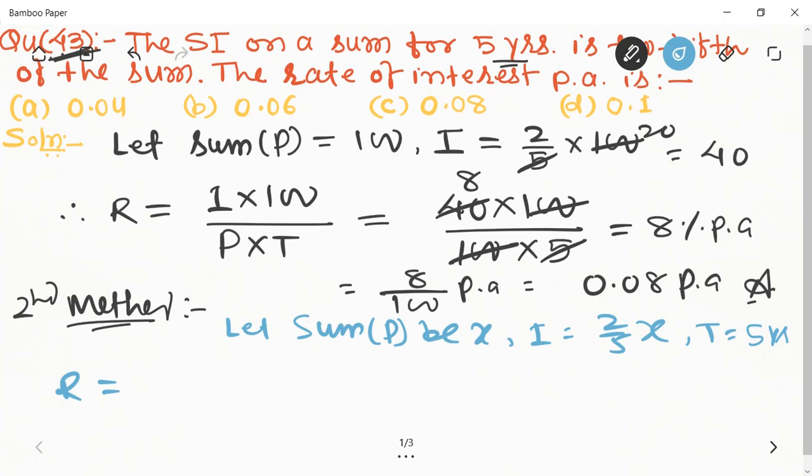Rate of interest equals the formula I × 100 upon P × T. Interest here is 2/5x × 100, principal is x, and time is five. x and x cancel, simplifying the expression to get eight percent.